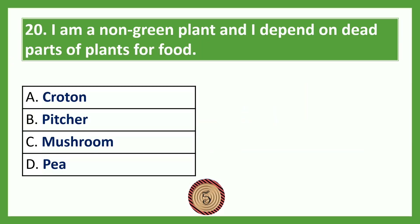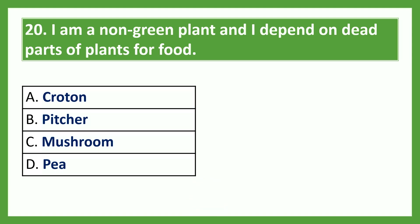I am a non-green plant and I depend on dead parts of plants for food. Option A: croton; Option B: pitcher plant; Option C: mushroom; Option D: pea. The answer is Option C, mushroom.